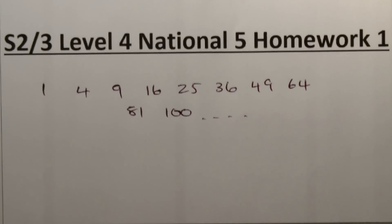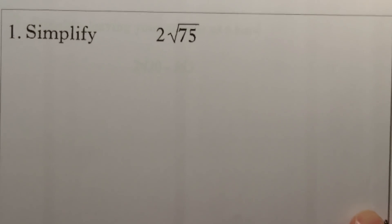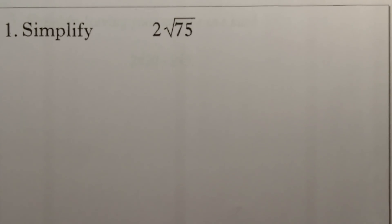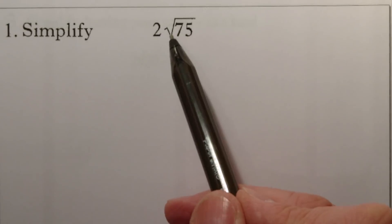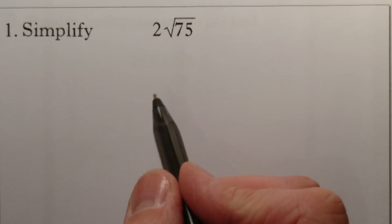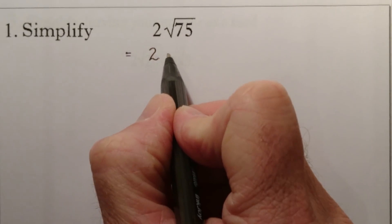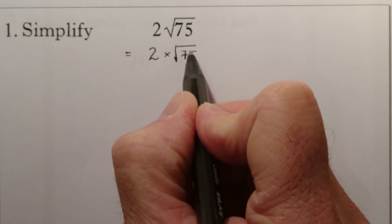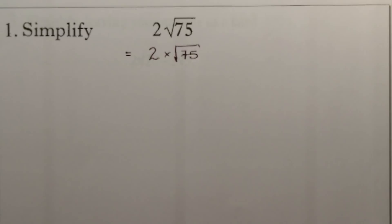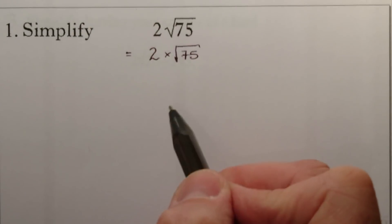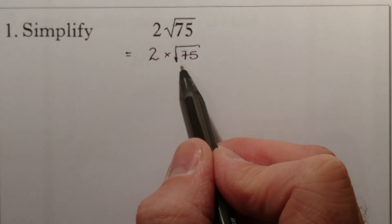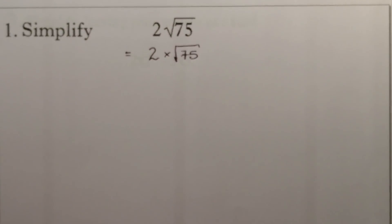Let's go to our first question. The first thing we have is to simplify 2 root 75. When I see that, I know it's a surds question because there's a square root. It might help to think of that as 2 times root 75. Looking at the square root of 75, I'm looking to simplify that into a square number and another number that multiply together to get it.